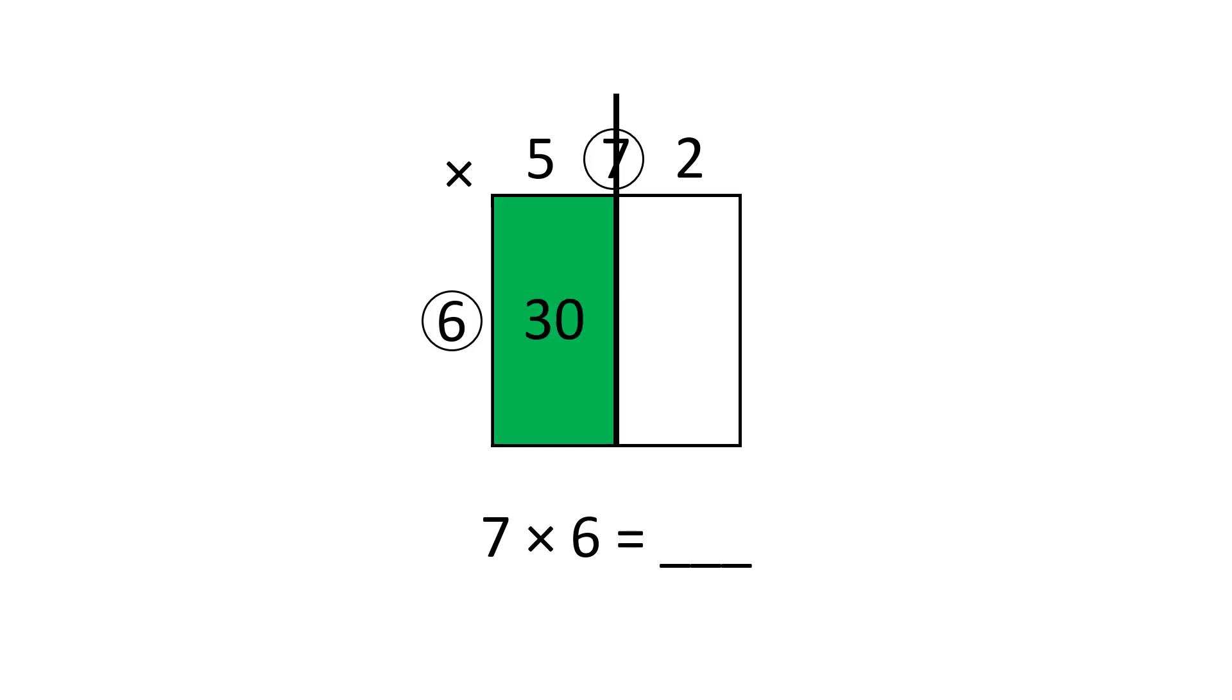5 times 6 is equal to 30, and 2 times 6 is equal to 12, and altogether this is equal to 42.